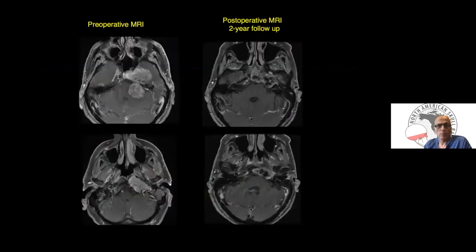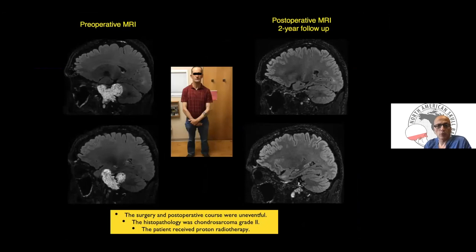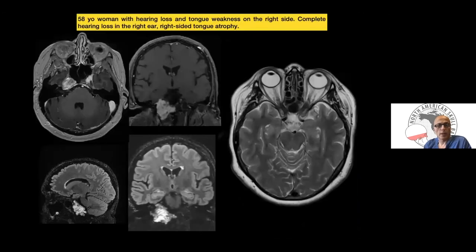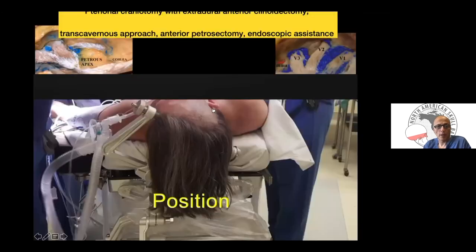Postoperative imaging shows gross total resection with good outcomes. This is another chondrosarcoma case utilizing this approach to the middle fossa and posterior cavernous sinus. The anatomical dissection shows the superior petrosal sinus, GSPN, V3, V2, and V1.